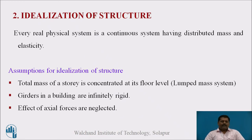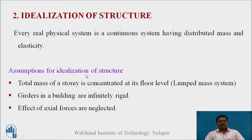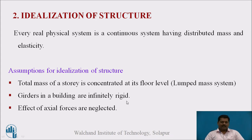Now, what is the idealization of the structure? All real physical systems are continuous systems having distributed mass and elasticity. The following are the assumptions for idealization of a building or structure. First, the total mass of a story is concentrated at its floor level — this is the lumped mass assumption. Second, girders or beams in a building are infinitely rigid. Third, the effects of axial forces are neglected, whether in beams or columns.